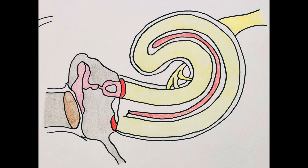We also find the Eustachian tube in the inferior aspect of the middle ear. It connects the middle ear to the nasopharynx — to simplify, it's a connection between the ear and the nose. It is made up of cartilage and bone, and its function is to equalize the pressure of the middle ear to the external ear canal. It runs in an anterior and medio-inferior direction.